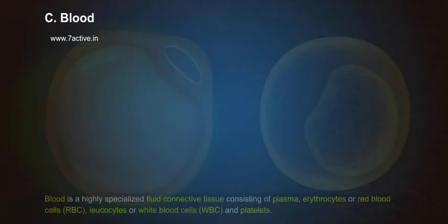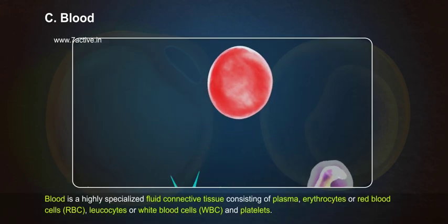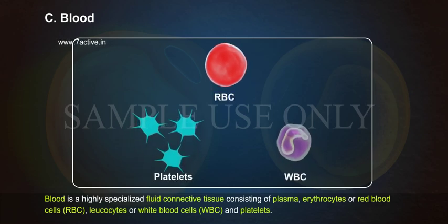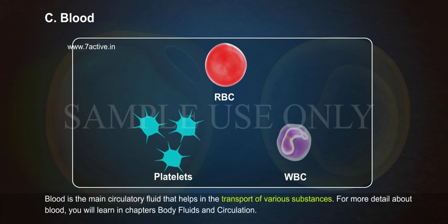Blood is a highly specialized fluid connective tissue consisting of plasma, erythrocytes or red blood cells (RBC), leukocytes or white blood cells (WBC), and platelets. Blood is the main circulatory fluid that helps in the transport of various substances. For more detail about blood, you will learn in the chapters on Body Fluids and Circulation.